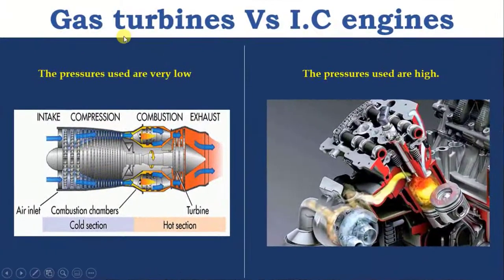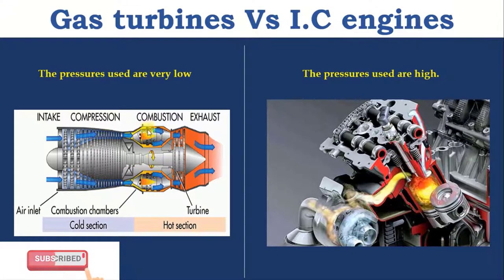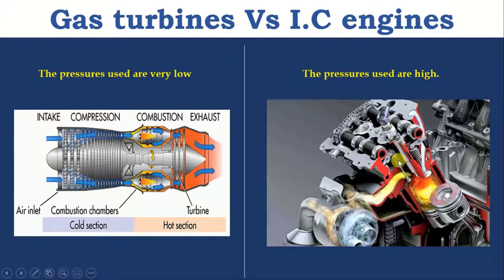The pressures used are very low in gas turbines, whereas the pressures used are high in IC engines. In a gas turbine, it requires maximum mass flow rate so that the pressure will be low. Whereas in IC engine, the combustion takes place in a closed system so that the pressure built inside the cylinder will be very high.